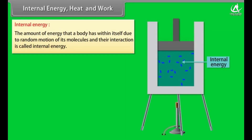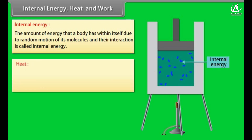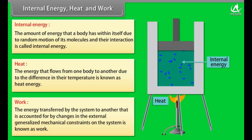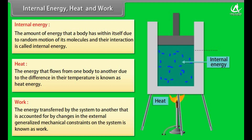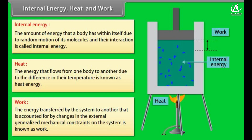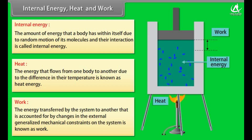The amount of energy a body has within itself due to random motion of its molecules and their interaction is called internal energy. The energy that flows from one body to another due to a difference in temperature is known as heat energy. The energy transferred by the system accounted for by changes in external mechanical constraints is known as work. For example, a gas in a container with a piston heated from the bottom: gas molecules in random motion expand due to heat energy, covering a larger volume — this displacement is the work done.